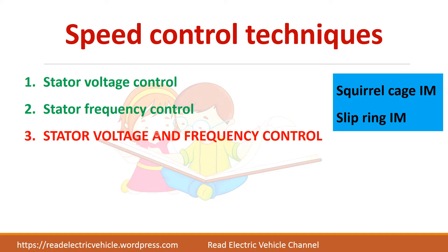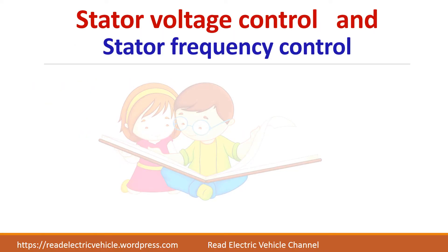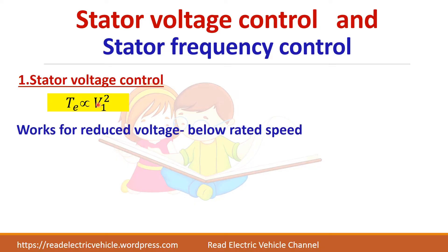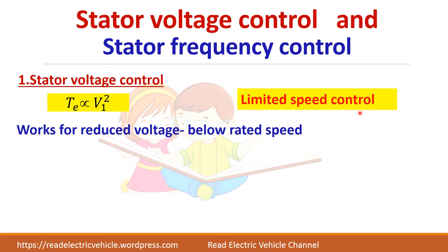These three techniques are applicable for both squirrel cage induction motor as well as slip ring induction motor. In stator voltage control technique, torque is directly proportional to voltage squared. By varying the stator voltage you are able to control the speed, but voltage can only be reduced — it cannot be increased beyond the rated value. So you can achieve speed control only below rated speed, which is a limited speed control drawback.